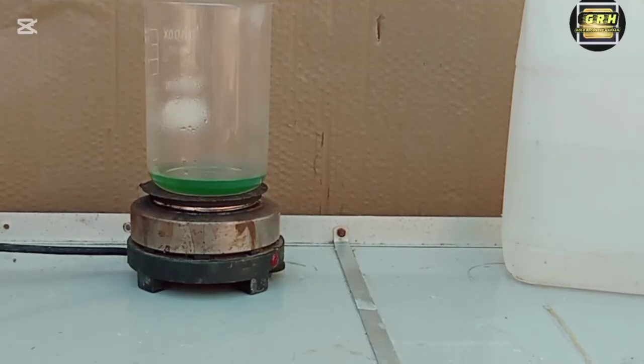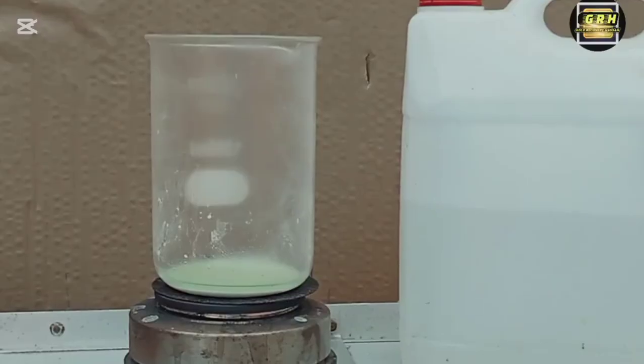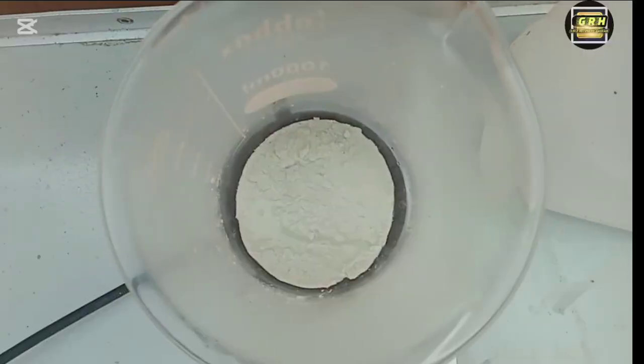When all the liquid has evaporated, yellow to light green crystals will appear. This is your iron sulfate.